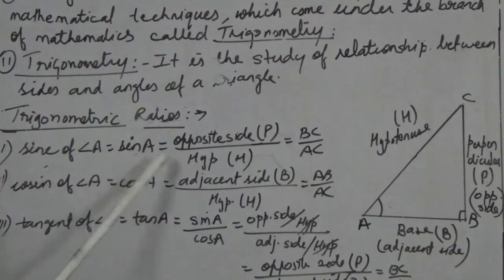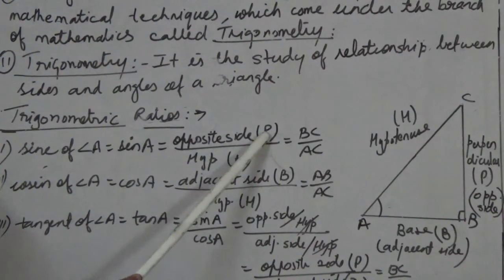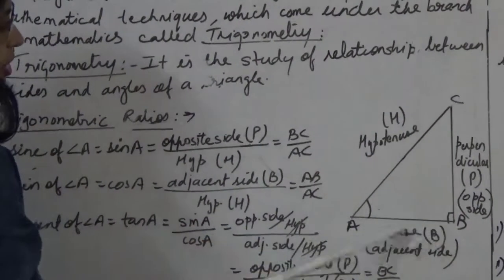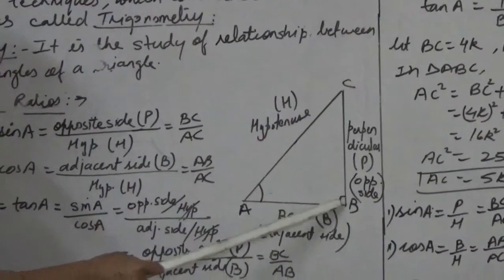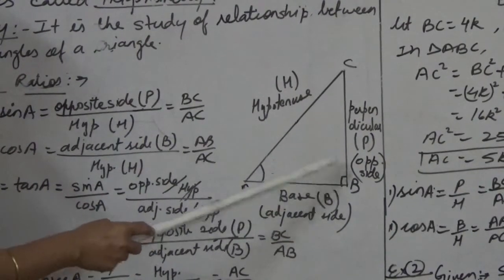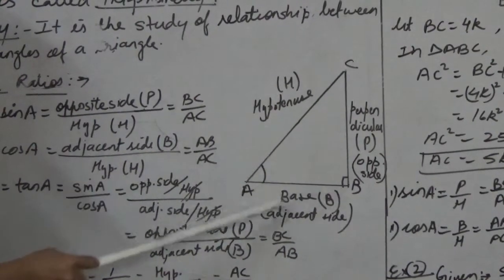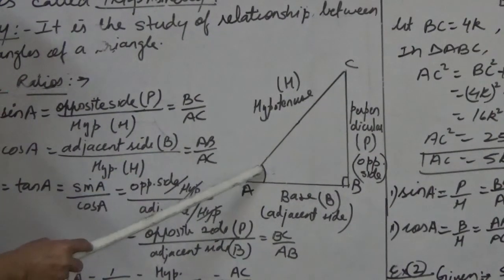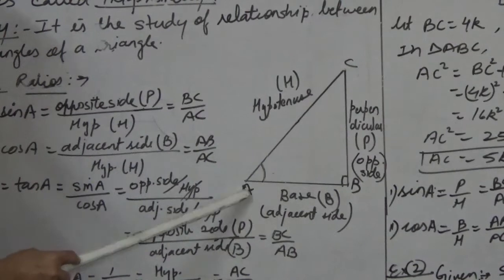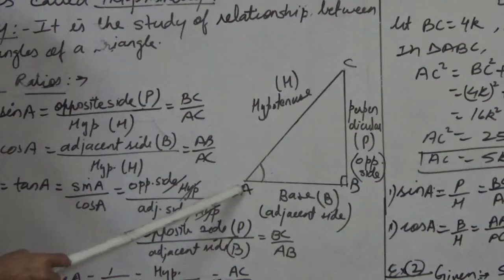Sin A is equals to the ratio of opposite side upon hypotenuse — that is perpendicular upon hypotenuse. In triangle ABC, angle B is a right angle at 90 degrees. The side opposite to 90 degrees is always called the hypotenuse, so AC is the hypotenuse. We have to find the trigonometric ratios with respect to angle A.